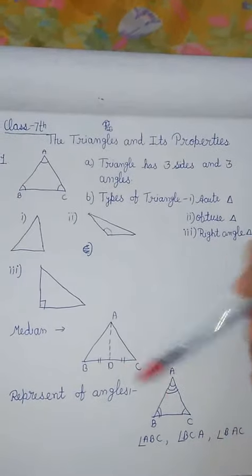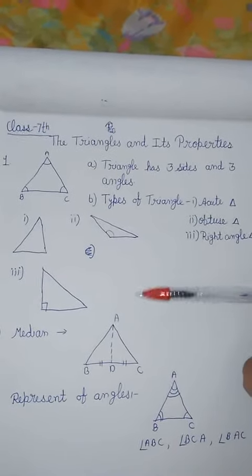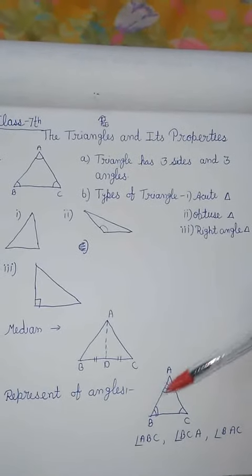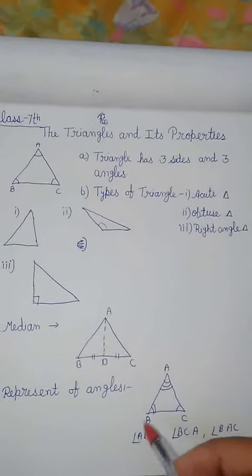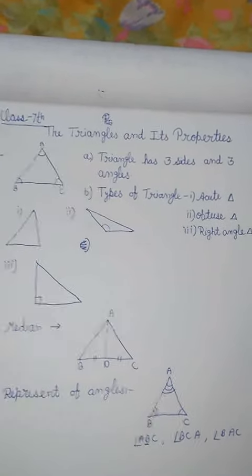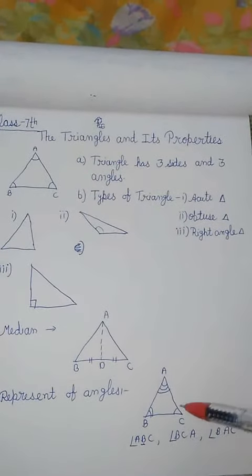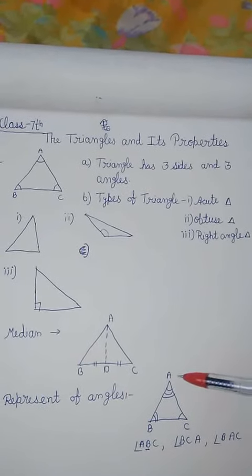Now representation of triangles. Here are three angles. How do we represent them? Angle ABC - if I want to represent angle B, I write angle ABC, where the middle letter is always the vertex we're looking at. If I want to show angle C, then A, C, B.